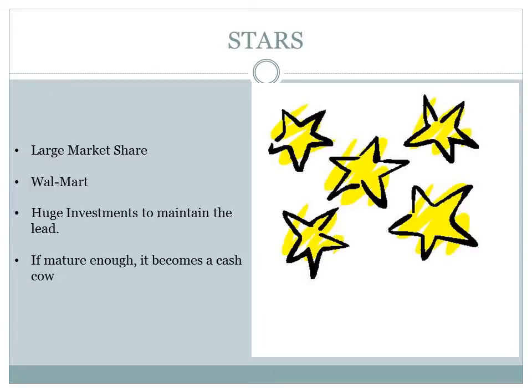Stars represent business units having large market share in a fast-growing industry. For example, Walmart — a high market share where everyone wants cheap products, which results in a high-growth business. Stars may generate cash, but because of a fast-growing market, they require huge investments to maintain their lead. Net cash flow is usually modest. Strategic business units in this cell are attractive as they are located in a robust industry, and these businesses are highly competitive. If successful, a star will become a cash cow when the industry matures.